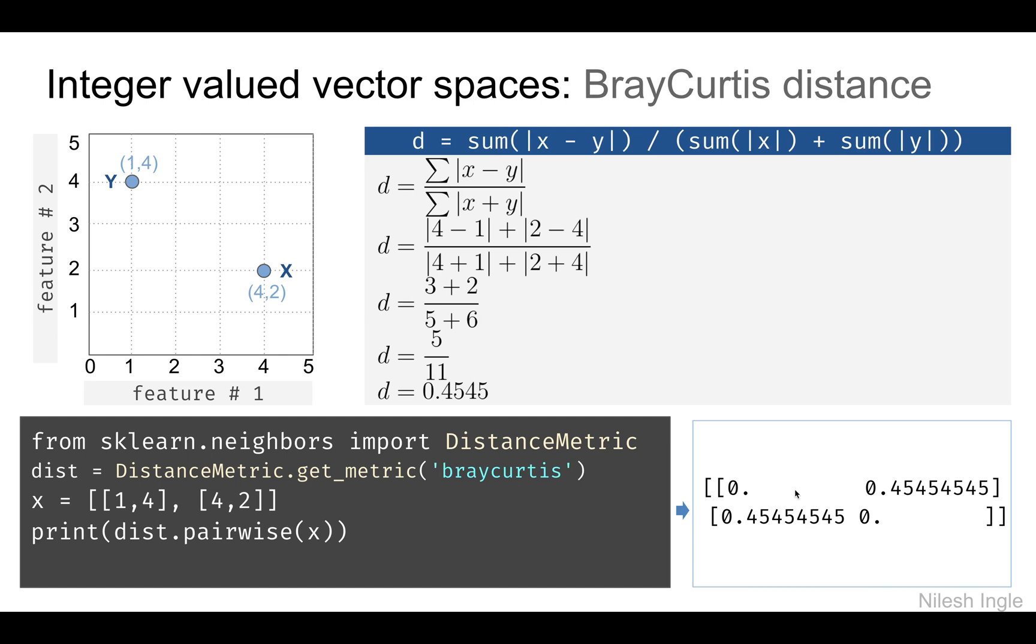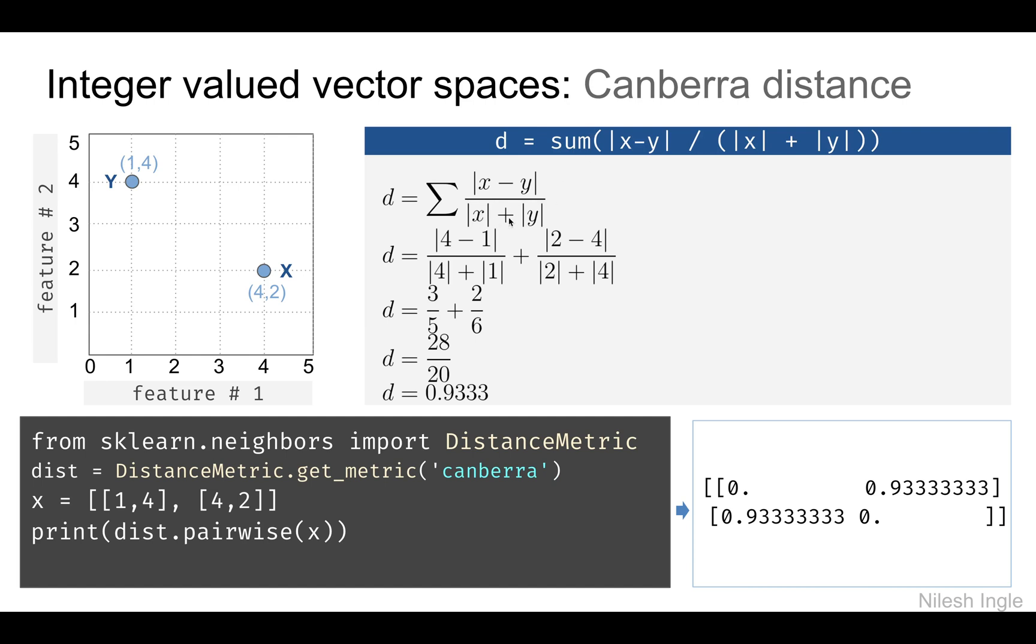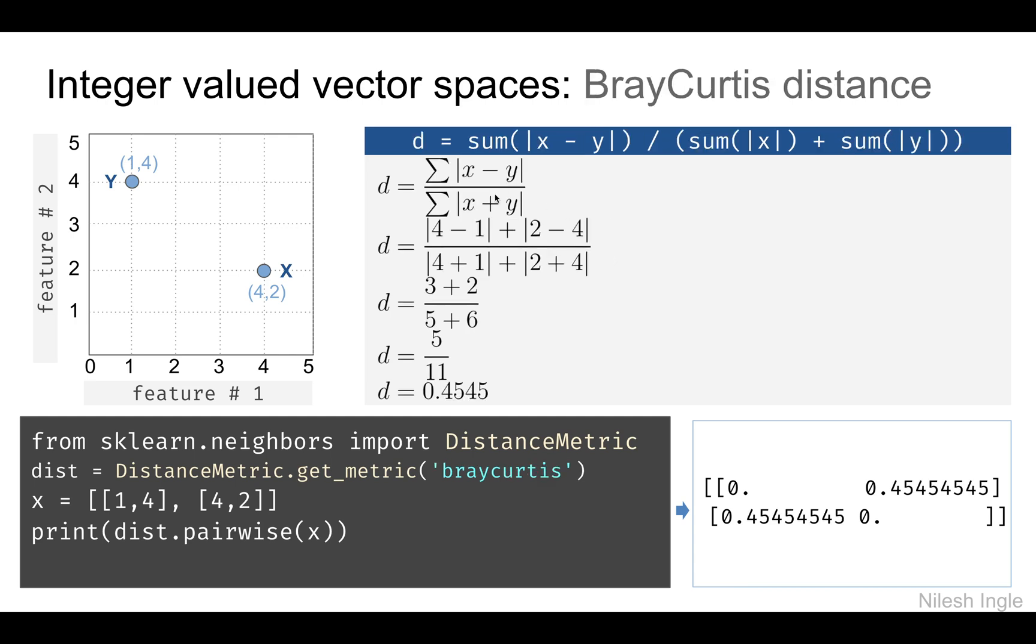For Canberra distance we have the denominator where we get the absolute value first and then add it. For Bray-Curtis, we add them first and then take the absolute value. The distance calculated comes out to 0.4545. This is the code where we specify Bray-Curtis as the distance to be used, and here is the output.